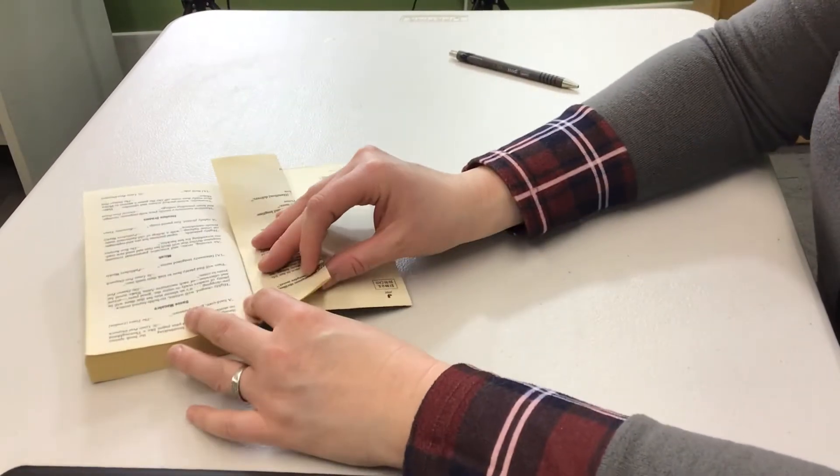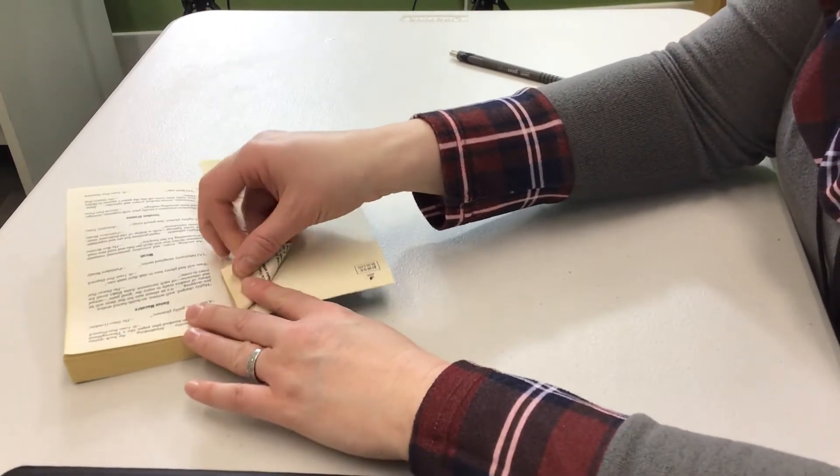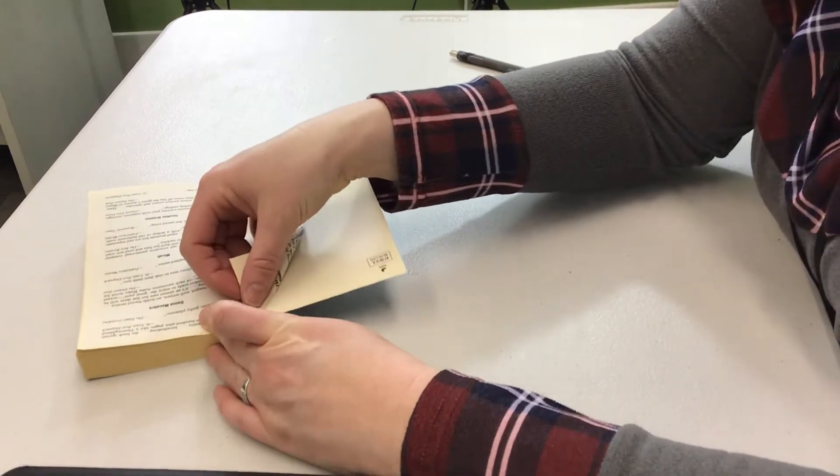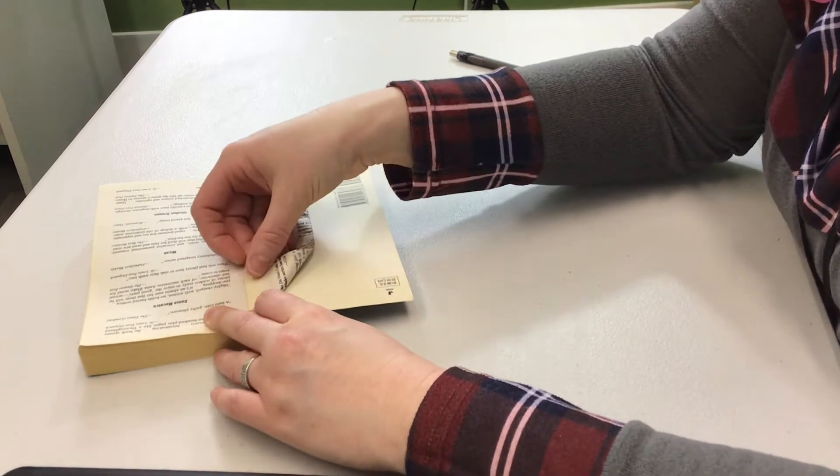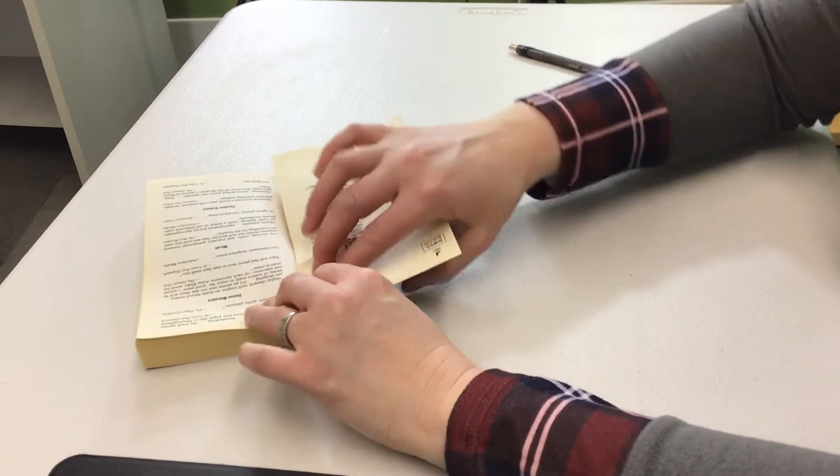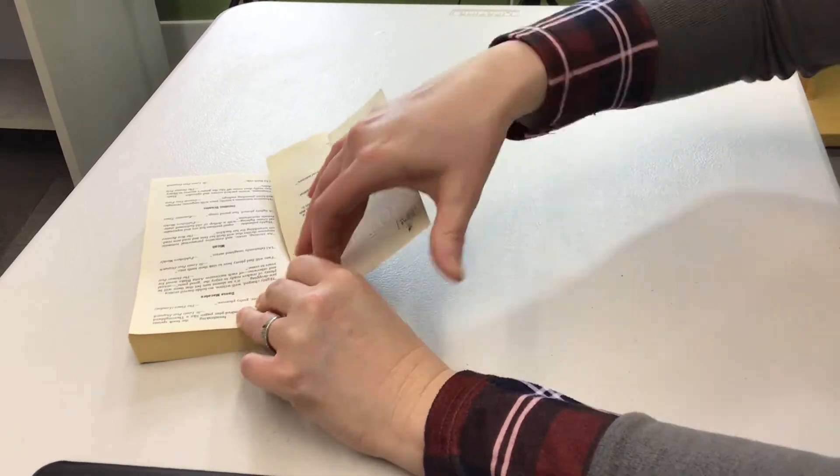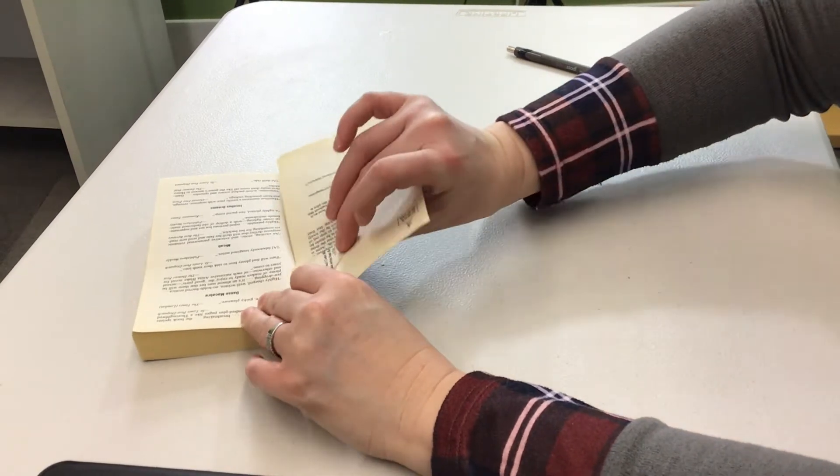So now you're going to take one of the corners and you're going to fold it into the spine. Again, just be careful. It might rip a little. Try not to, but if it does, that's all right. And you're going to take it right up to the spine there, or the center, I should say. And you're just going to fold it nice and tight.